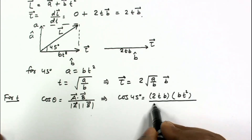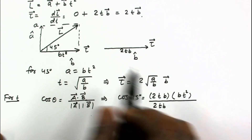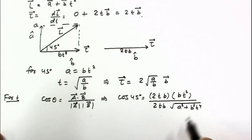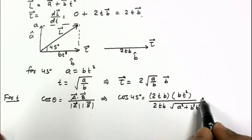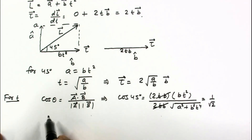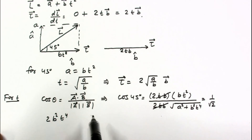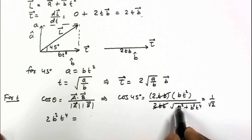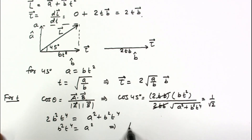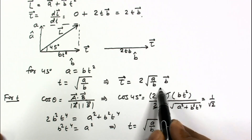Dividing by the magnitude of torque 2tb, and the magnitude of angular momentum — since the two components are perpendicular — is √(a² + b²t⁴). Setting this equal to cos 45° = 1/√2, simplifying and squaring both sides gives 2b²t⁴ = a²b²t⁴, leading to b²t⁴ = a², so t = √(a/b), confirming the same result. Substituting this time into the torque expression gives the final answer.